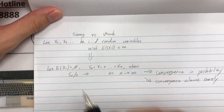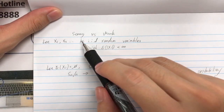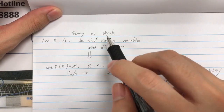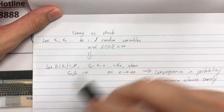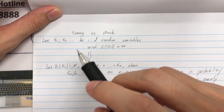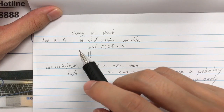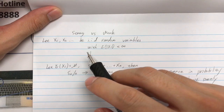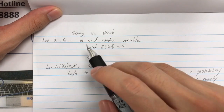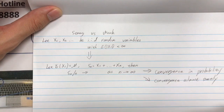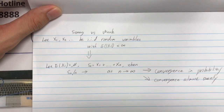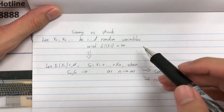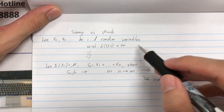Hello everyone, today I want to share my understanding of two concepts: the Strong Law of Large Numbers and the Weak Law of Large Numbers, which we often meet in introductory statistics courses. This video serves the purpose of explaining these two concepts to others without the need for rigorous mathematical proof. Basically, these two concepts are derived under the same conditions, which I have written down here.